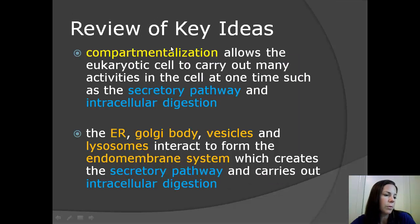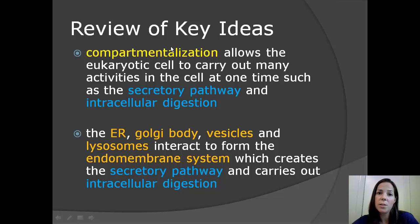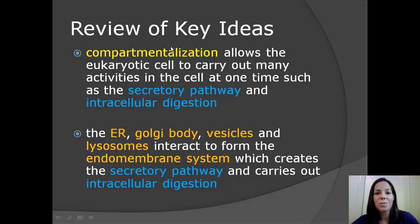Let's review the key ideas at the end of the lesson. Compartmentalization allows the eukaryotic cell to carry out many activities at one time, such as the secretory pathway and intracellular digestion. The ER, Golgi body, vesicles, and lysosomes interact to form the endomembrane system, which creates the secretory pathway and carries out intracellular digestion. That's it for the secretory pathway and intracellular digestion. Thanks for watching.